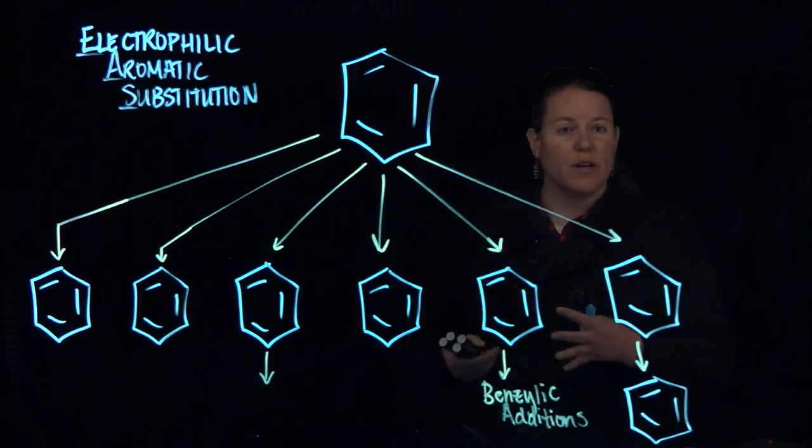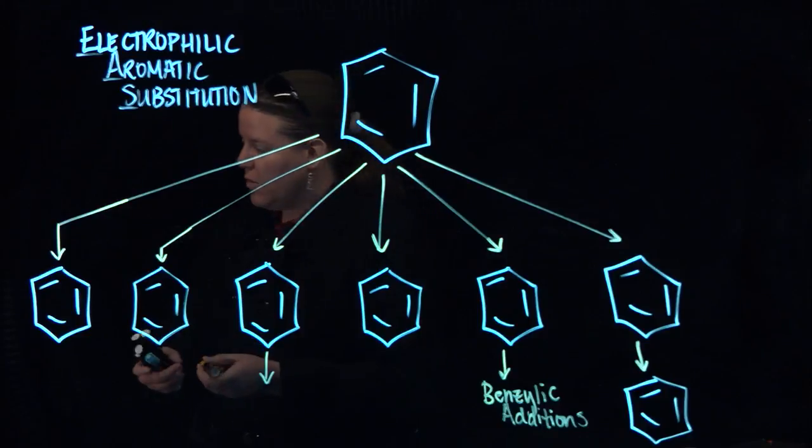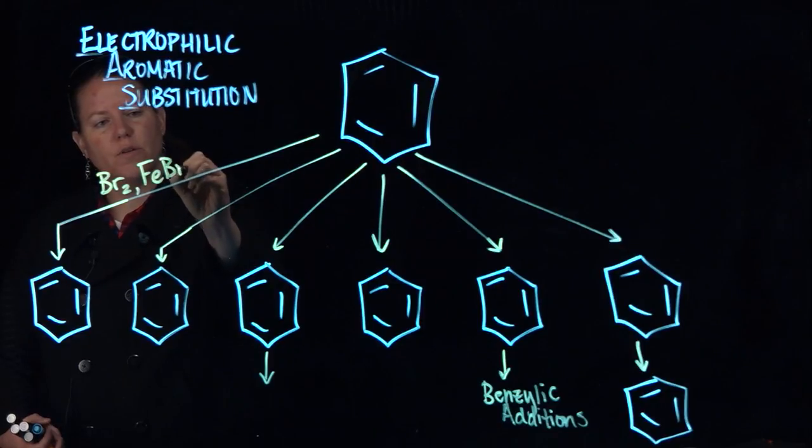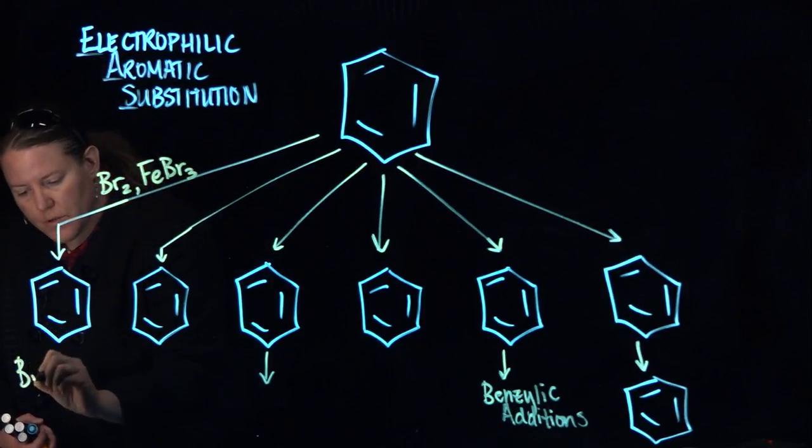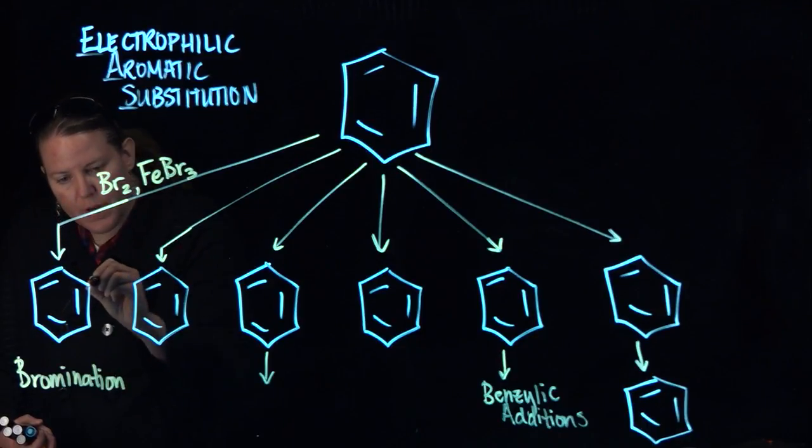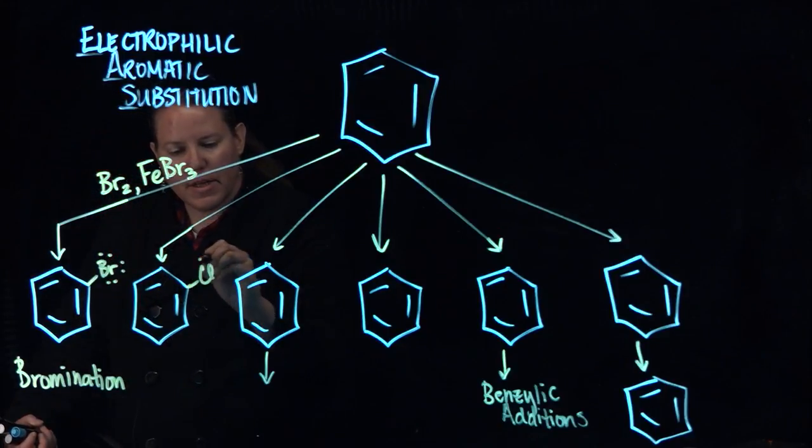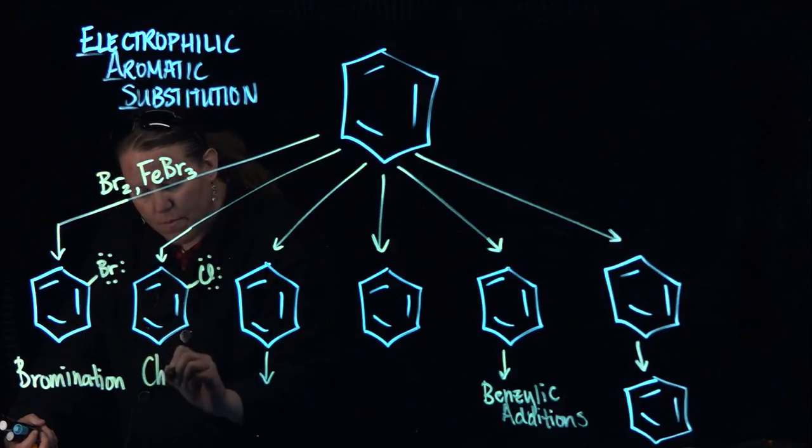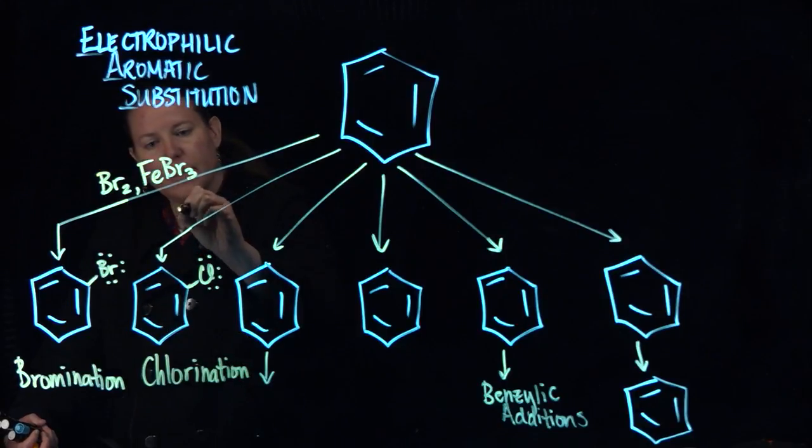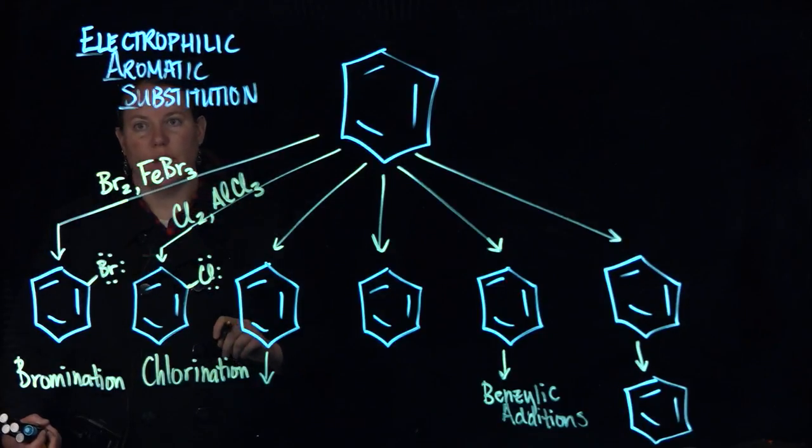The preparation of the electrophile will look different depending on what the reaction is. So in other words we could do Br2 and let's say FeBr3, of course you could do aluminum here as well, and that's going to result in a bromination, adding a Br on the ring. Chlorination adds a Cl on the ring, and that is Cl2 and that is usually aluminum chloride that goes along with that.